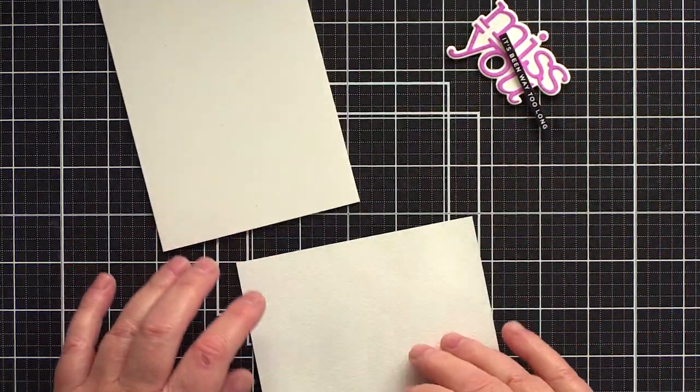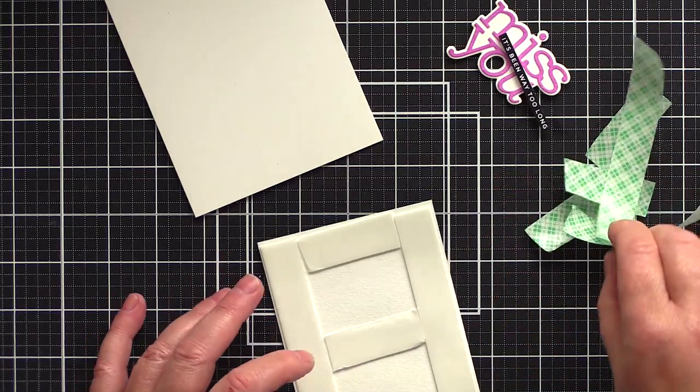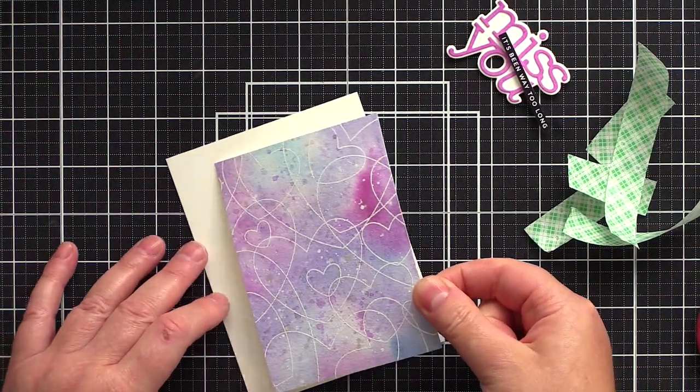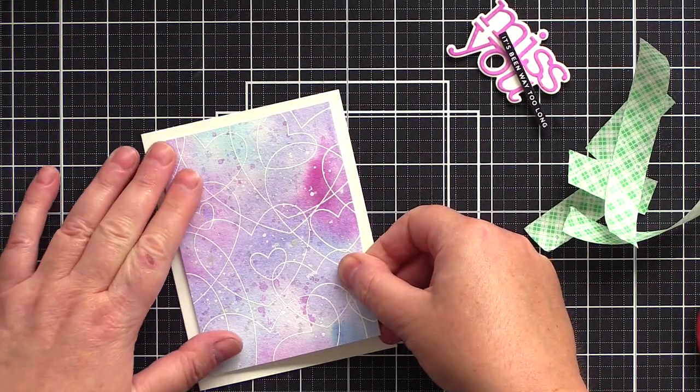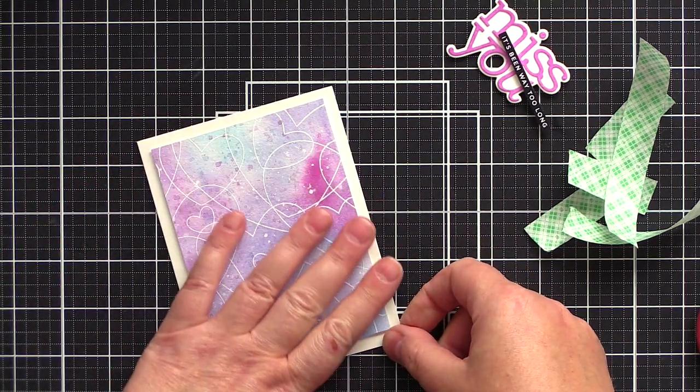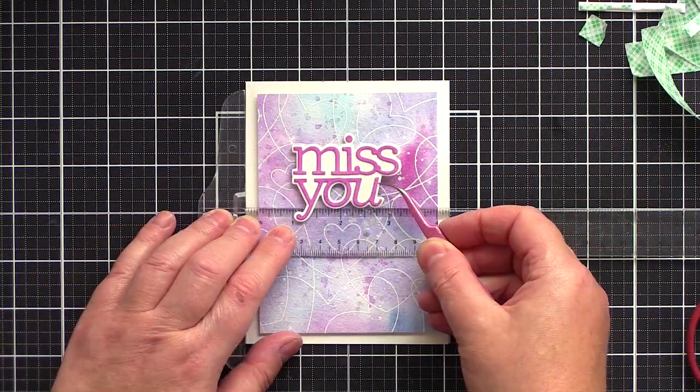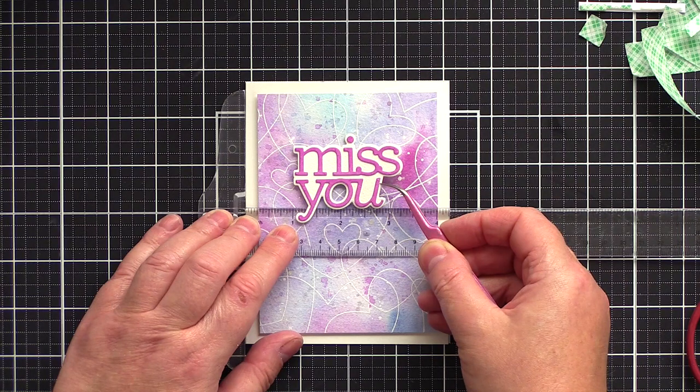I then started playing around with placement. I did debate whether to cut the watercolor piece with a circle die as I felt the sentiment was getting a bit lost. However, in the end I decided on simply trimming down the background a bit.